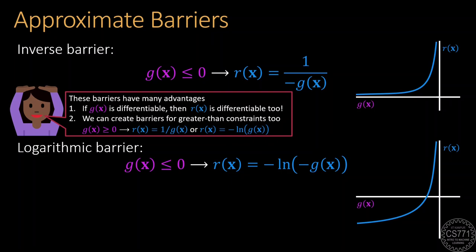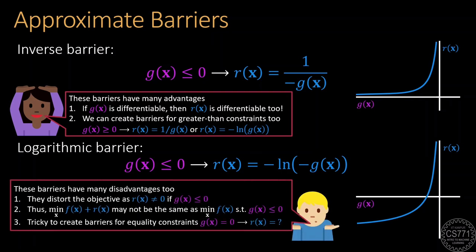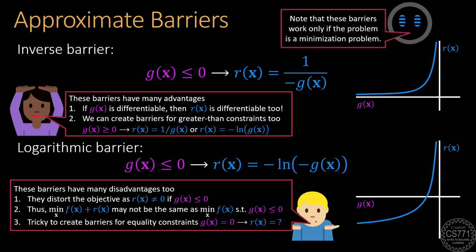However, these barrier functions may also distort the objective since they take a non-zero value inside the feasible set. Moreover, handling equality constraints is tricky when using these barrier functions. One thing to keep in mind while using these barrier functions is that these barrier functions shoot up to positive infinity at the boundary of the feasible set. Thus, they will work only if our problem is a minimization problem. If our problem is a maximization problem, we must first convert it into a minimization problem by negating the objective.